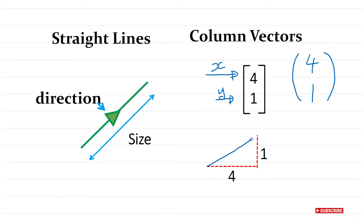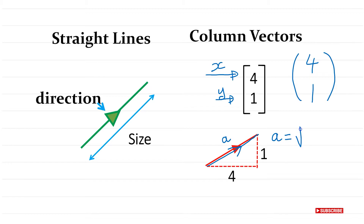So that is your vector shown on the diagram — four to the right and one up. If you want to find the size of this vector, you can use the Pythagorean theorem. If we call it vector a, then the magnitude of a is simply the square root of four squared plus one squared. I just want to show you what this looks like — we're not doing full calculations yet.